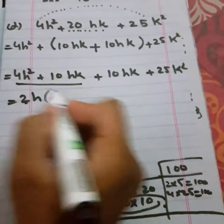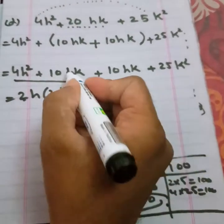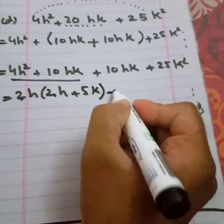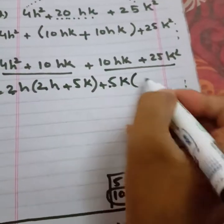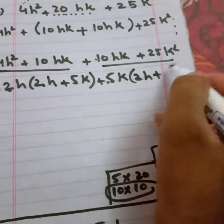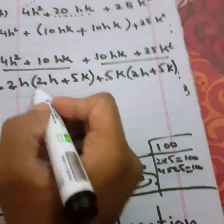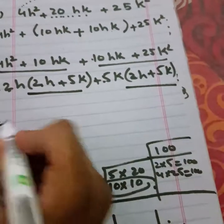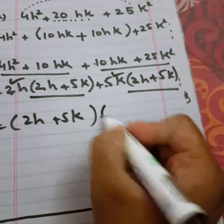From here, 5 is common and k is common. 5 times 5 is 25, 1k is common. You can see this and this are the same, so this is common: 2h + 5k. And this 2h + 5k will remain. The answer is (2h + 5k)(2h + 5k).